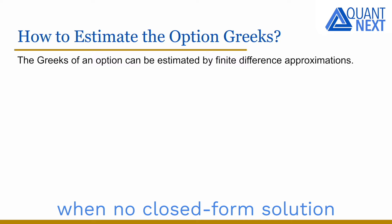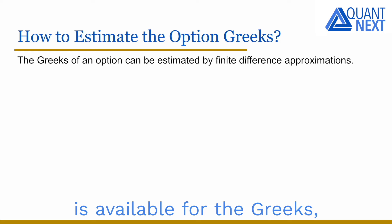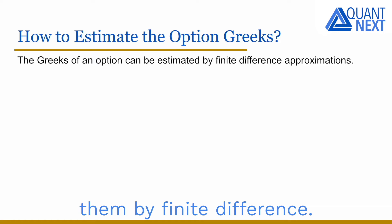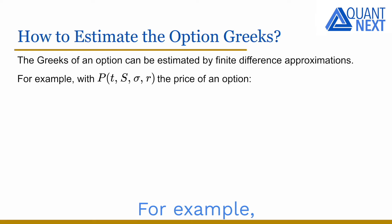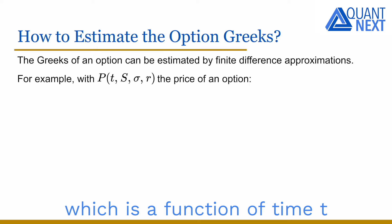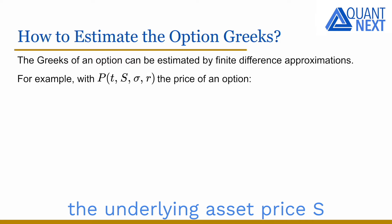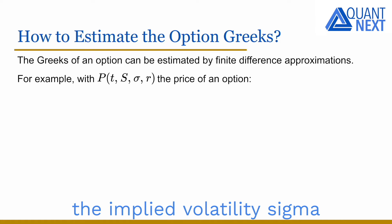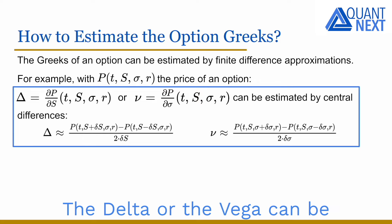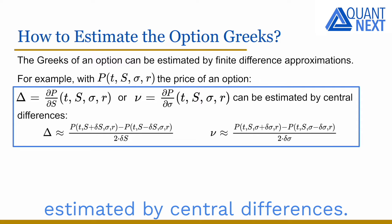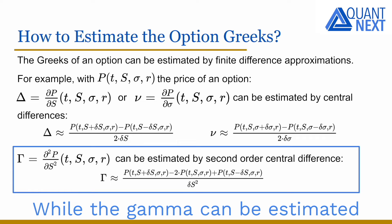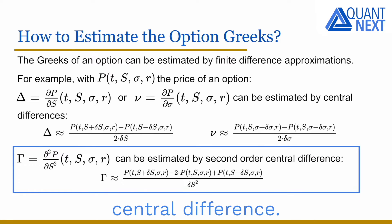When no closed-form solution is available for the Greeks, which is often the case, we can approximate them by finite difference. For example, with p the price of an option in the Black-Scholes framework, which is a function of time t, the underlying asset price s, the implied volatility sigma, and the risk-free interest rate r, the delta or the vega can be estimated by central differences, while the gamma can be estimated by second-order central difference.